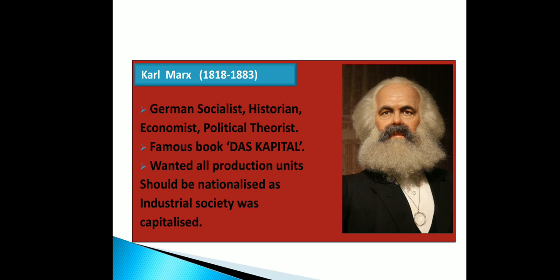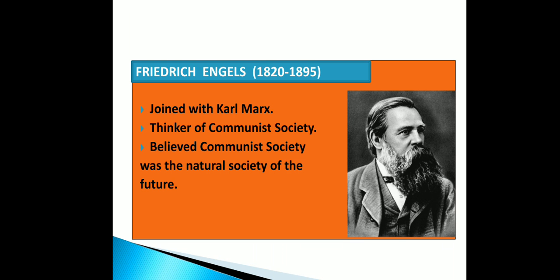Now we will discuss about Friedrich Engels, 1820 to 1895. He joined with Karl Marx and was a thinker of communist society. Like Karl Marx, he suggested that workers have to overthrow capitalism, and this could be possible only through revolution. Both Engels and Karl Marx wanted a society where all property was socially controlled. This would be a communist society, which they believed was the natural society of the future.